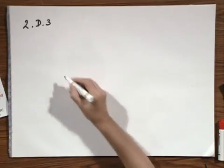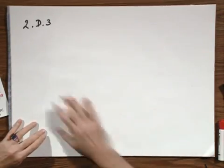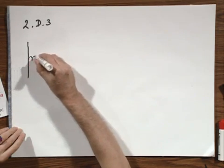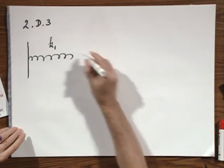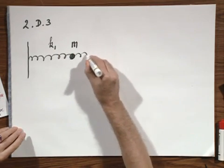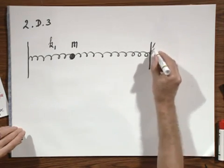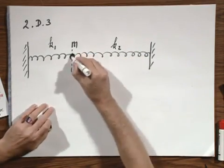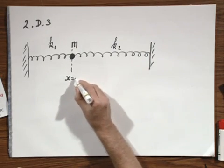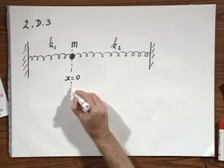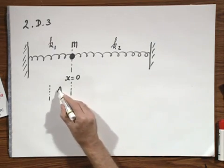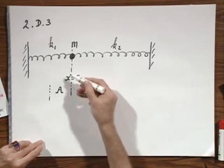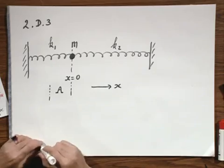Problem 2D3. A frictionless horizontal surface — the plane of paper is my horizontal surface. I have a spring with constant K1, a mass M, and a spring with spring constant K2. This object is in equilibrium, lying still on the table. I call this X equals 0, and I am going to place this in the minus X direction over a distance A. I call this the plus X direction. Let us first make the assumption that in this particular configuration, the way I have drawn it, both springs are relaxed.